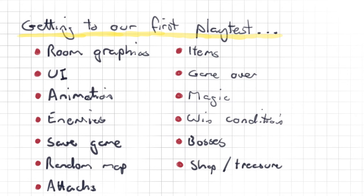So what features are we going to be looking at? We're on episode nine, almost on episode ten. We need some graphics for our rooms, we need a UI, we need to cover some sprite animation and sprite sheets. We need enemies, we need to be able to save and reload our game. Random map generation is going to be important, having attacks and items we can use also very important. Game over — we need a way to lose. Magic is going to be key if we want to get that roguelike hack and slash Golden Axe style thing going on. Having a win condition — being able to lose is important, being able to win also very important. Bosses: having some nice memorable bosses is always a good idea. And some kind of shop or treasure system, so people have a reason to play the game other than just defeating the final boss — you want that micro reward system in there as well.